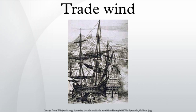Trade winds also transport African dust westward across the Atlantic Ocean into the Caribbean Sea, as well as portions of southeastern North America. Shallow cumulus clouds are seen within trade wind regimes, and are capped from becoming taller by a trade wind inversion, which is caused by descending air aloft from within the subtropical ridge. The weaker the trade winds become, the more rainfall can be expected in the neighboring land masses.